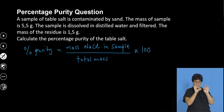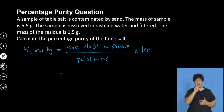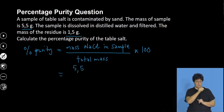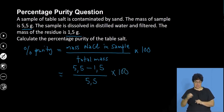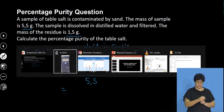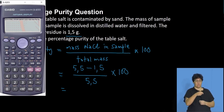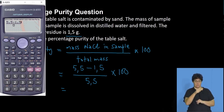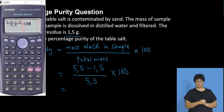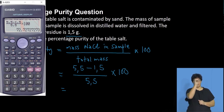This is a routine type of question — identify the correct formula, do the necessary substitution, and find the answer. The mass of sodium chloride in the sample is the total mass minus the mass of the impurity: 5.5 minus 1.5, divided by the total mass of 5.5 grams, multiplied by 100. Punching that into the calculator: (5.5 − 1.5) ÷ 5.5 × 100.